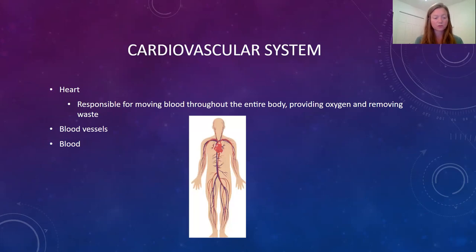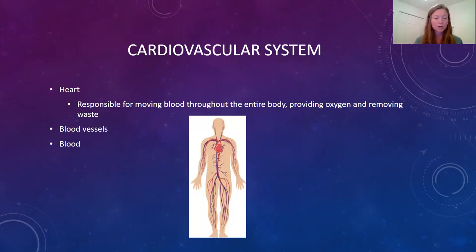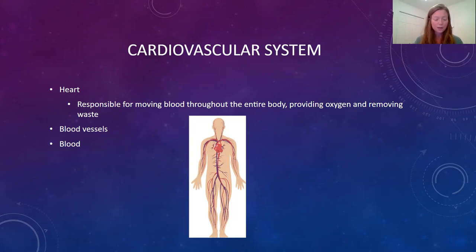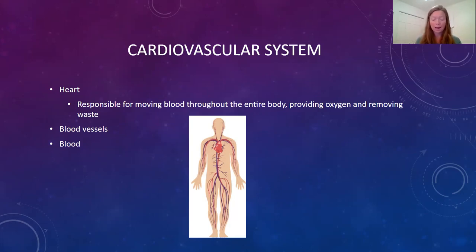Our cardiovascular system — also called the circulatory system — is made up of the heart, blood vessels, and our blood. The entire chapter 6 covers the cardiovascular system in detail. It is responsible for sending blood to the lungs to get oxygen, then to the digestive system to collect nutrients, and then delivering those oxygen and nutrients throughout the cells of the body. As the blood travels through the body, it's also picking up carbon dioxide and other waste products to get filtered out.